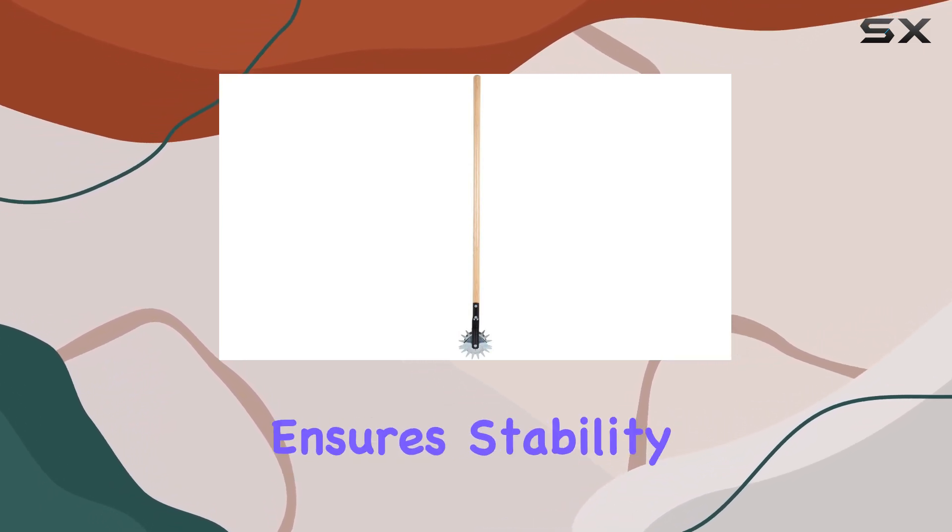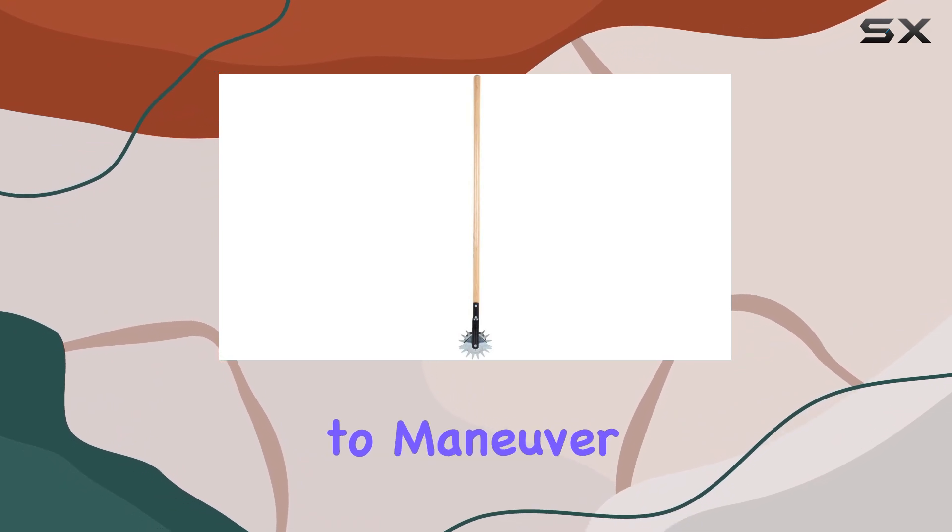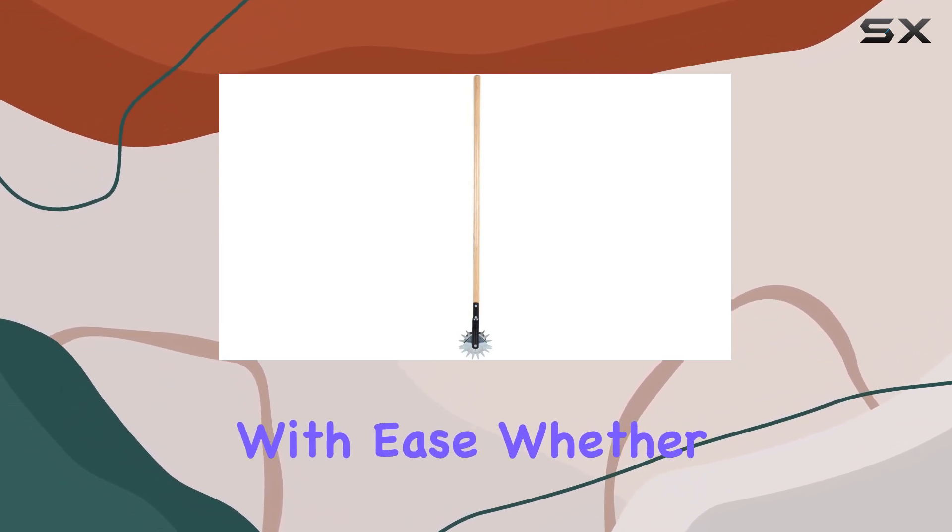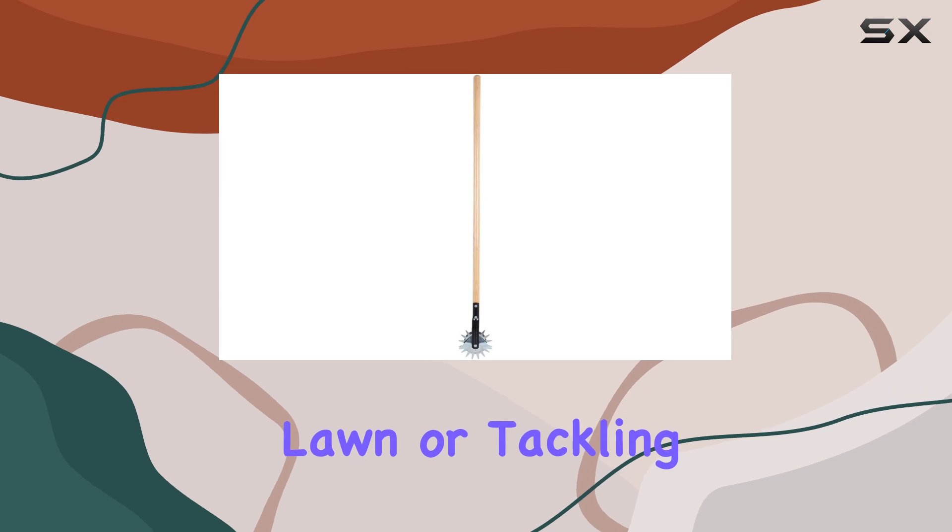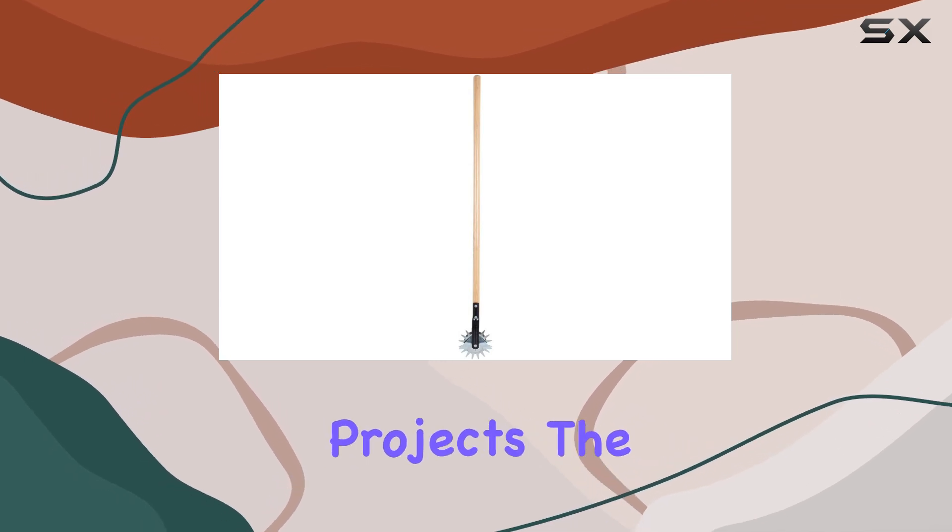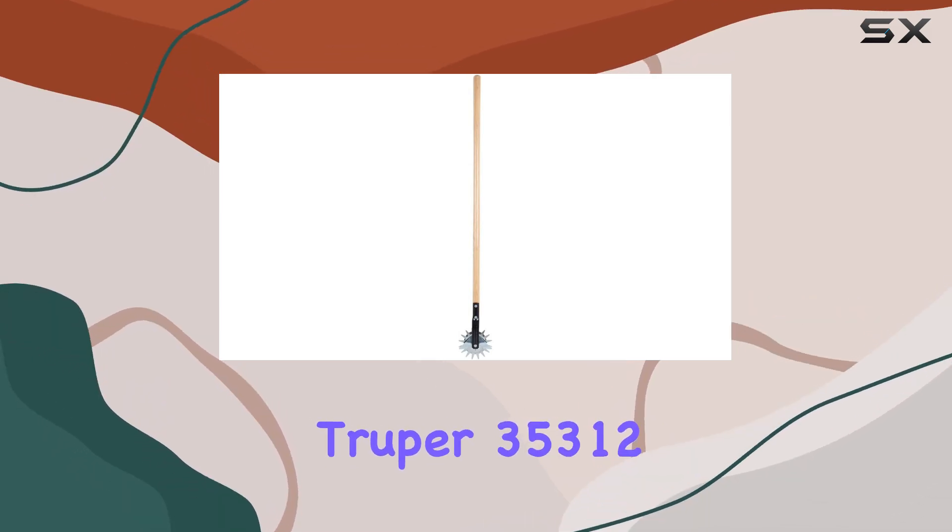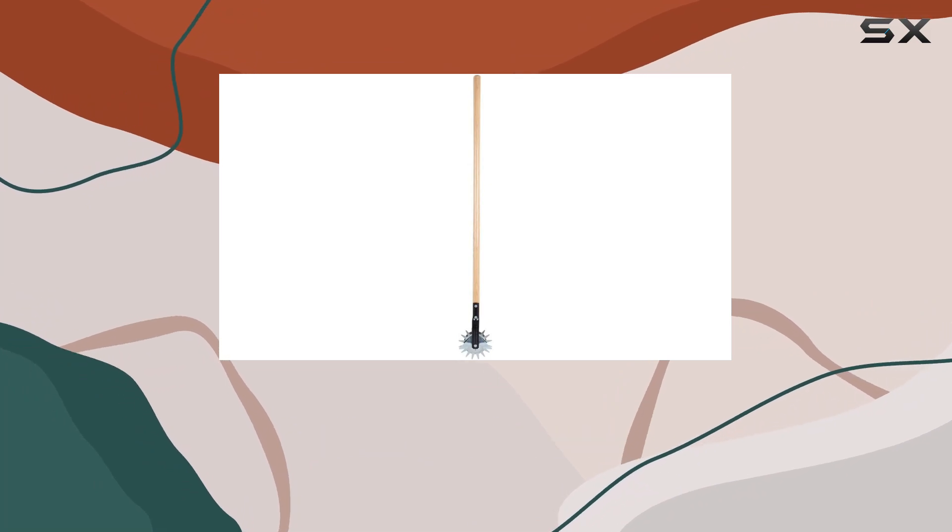The single-wheel design ensures stability, allowing you to maneuver around obstacles with ease. Whether you're maintaining a neatly manicured lawn or tackling more extensive landscaping projects, the Trooper 35312 delivers reliable performance every time.